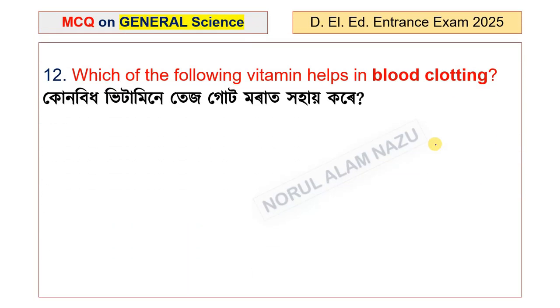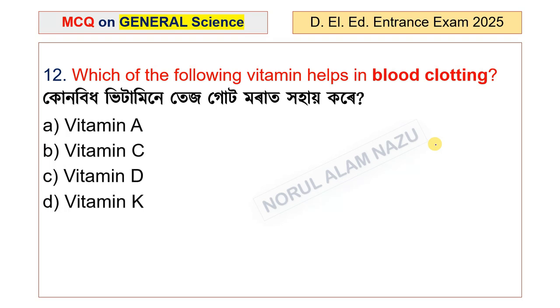Which of the following vitamins helps in blood clotting? The options are vitamin A, C, D, and K. The answer is vitamin K. Vitamin K helps in blood clotting in the human body.